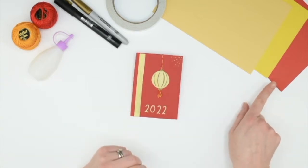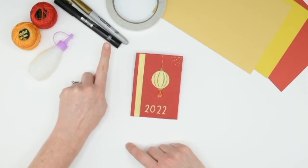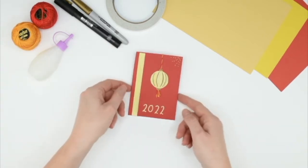To do this you will need red and yellow card, double-sided tape, gold paint or pens, PVA glue and some thread.